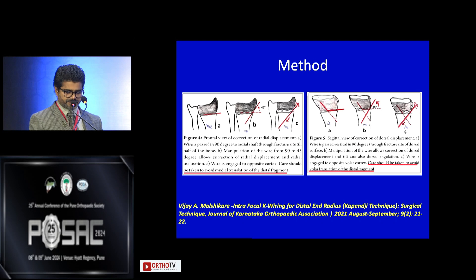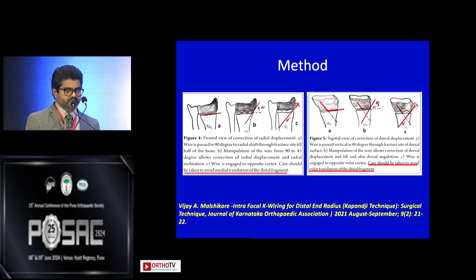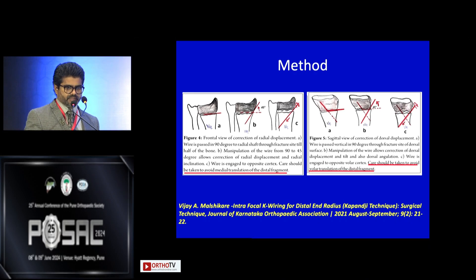For the method, we first approach the radial side, take an incision, open the compartment, and isolate the superficial radial nerve. Then we pass a K-wire at 90 degrees up to two-thirds, then change the angle from 90 to 45 degrees to reduce the radial tilt. Similarly, if there is dorsal displacement, we go dorsally, separate the tendon, and pass a K-wire up to 2 mm from center.